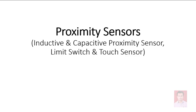Let's continue with the next lecture, which is based on proximity sensors. We have seen some examples of proximity sensors in previous videos — I covered the IR sensor and the ultrasonic sensor. We are going to take the discussion to the next level from a construction point of view. The basic types of proximity sensors are inductive and capacitive types.